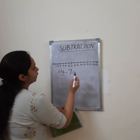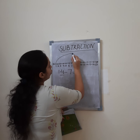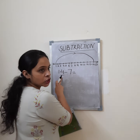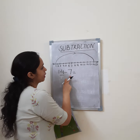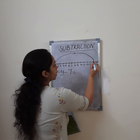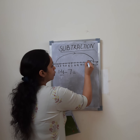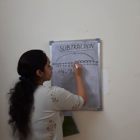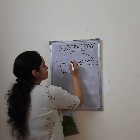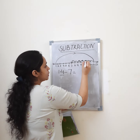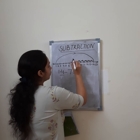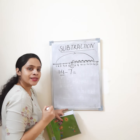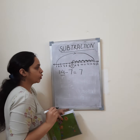First we reach 14 on the number line. Then how many steps do we go back? 7 steps. So from 14 we jump backward: 1, 2, 3, 4, 5, 6, and 7. We take only 7 steps in this direction — backward, not forward. After 7 backward steps from 14, where do we reach? 7. So 14 minus 7 is equal to 7.